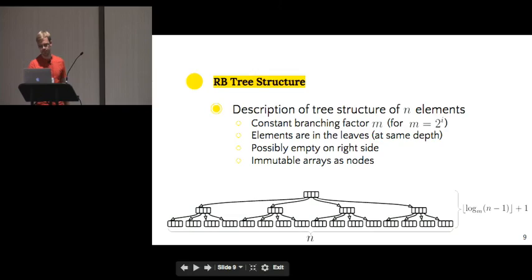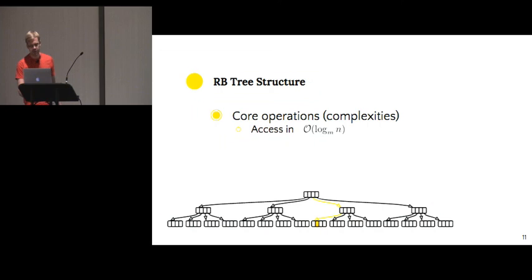So, the core operations that we can implement on this structure are, first, access. Basically, to traverse this tree, we only need to know two things. The index where we want to go, and the current depth of the node. And then, with just a few low-level operations, which require some bit shifting and masking, we can get all the sub-indices of each node in the way. So, it's logarithmic time because we have to go through all the, from the root to the leaf.